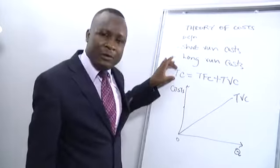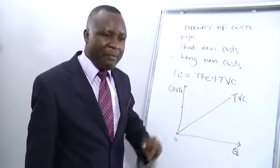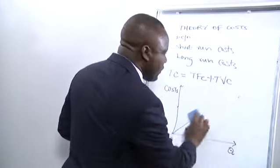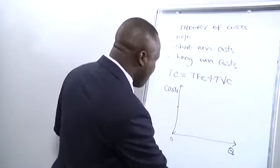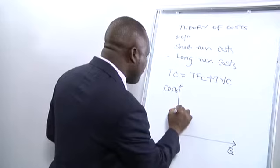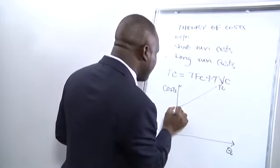Remember that our total costs are given by total fixed costs plus total variable costs. Now, for that reason, our total cost curve will begin from the level of fixed costs and then move up like that. It never begins from the origin.